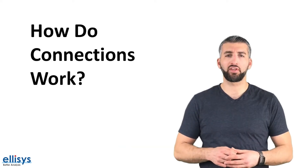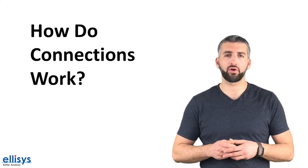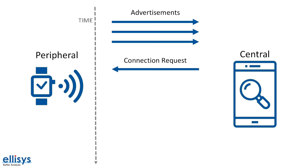Now that we understand what connections are and why they're important, let's take a look at how they work. It all starts with the peripheral sending out advertisement packets, allowing the central to discover it. Once the central device discovers the peripheral, it may decide to initiate a connection. The central is the only device that can initiate the connection; the peripheral's role is simply to advertise its ability to accept connections. In Bluetooth 5, connections can now be initiated on secondary advertisement channels, but for simplicity let's focus on connections established on the primary channels.